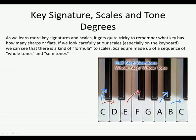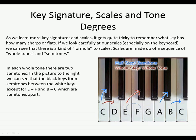Between neighboring notes there's generally a semitone. Between C and D there is a whole tone because there's a black note next to them. E and F are neighboring notes — they don't have a black note between them, so there is a semitone between them. F and G have a black note between them, so they are a whole tone. The black keys form semitones between the white keys, except E to F and B to C, which are both semitones with no black key between them.